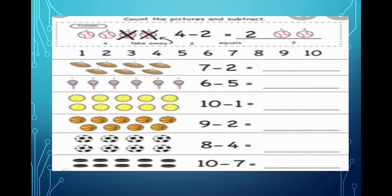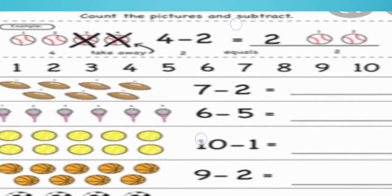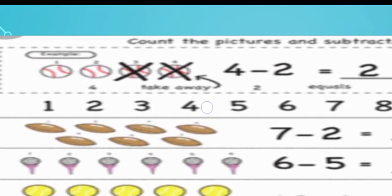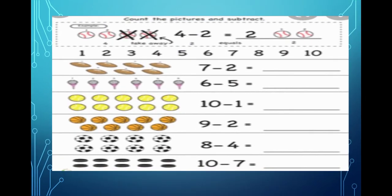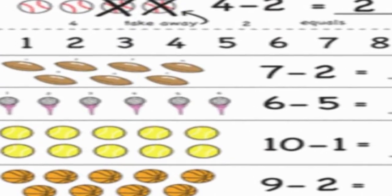The first question is: count the pictures and subtract. The first one is done for you — four pictures are given, out of that two you have to cut, and the answer is two. Now here, what is this picture? It is the picture of some chocolate.